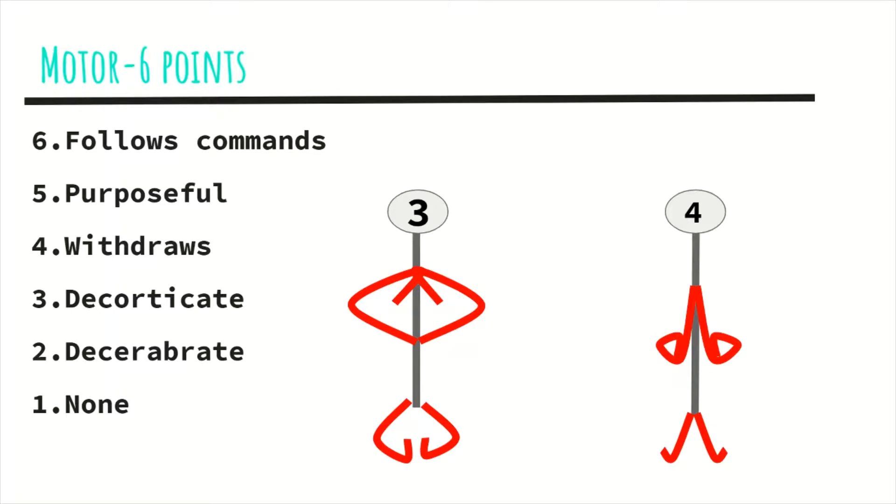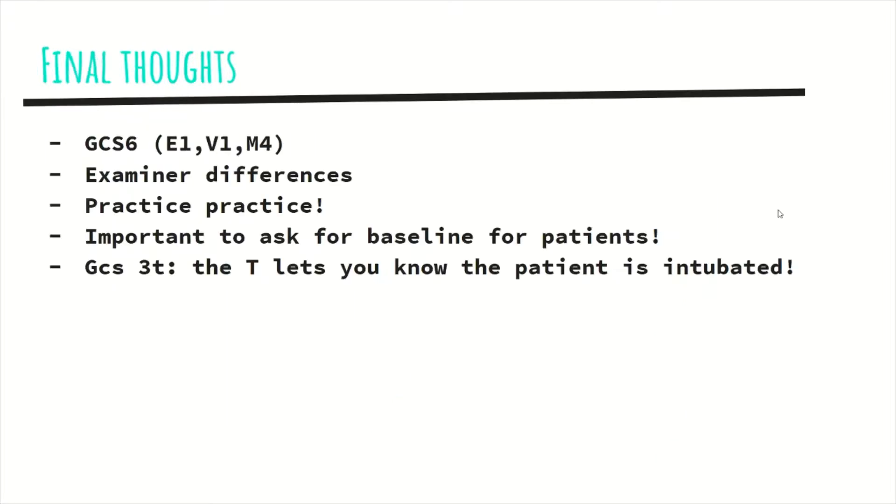And then for two points we have decerebrate posturing, which after providing some stimuli, the arms, the wrist, and the legs extend outward away from the core, as shown by the example at the top. And then once you see in real life for these two, you're not going to forget how it looks. And then finally, for one point, there is no movement whatsoever.